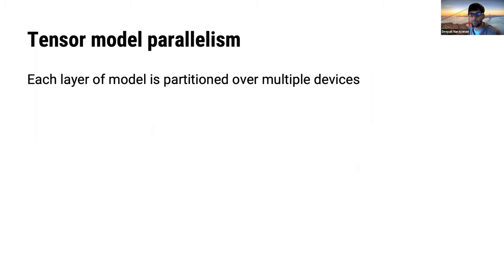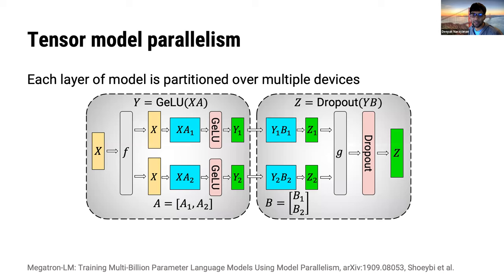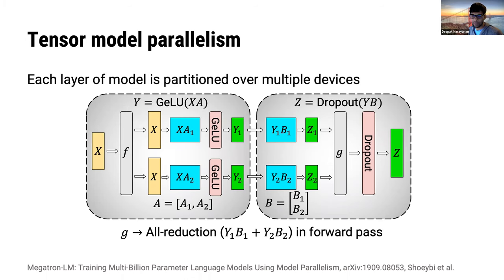With tensor model parallelism, layers or operators in the model are split over multiple accelerators. Depending on how these operators are split, different communication patterns are needed. For example, Megatron proposes a specific splitting strategy for transformer models: transformer blocks consist of several matrix multiplications that are distributed over multiple GPUs. This process can be communication-intensive, especially when performed across multi-GPU servers.